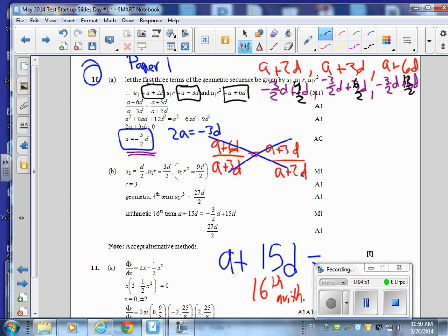And 4 halves D minus 3 halves D is 1 half D. 6 halves D minus 3D is 3 halves D. And then 12 minus 3 is 9 halves D.